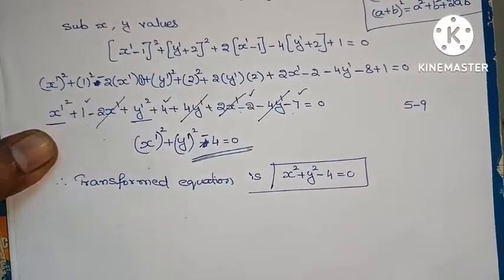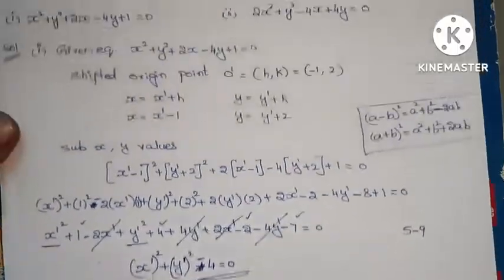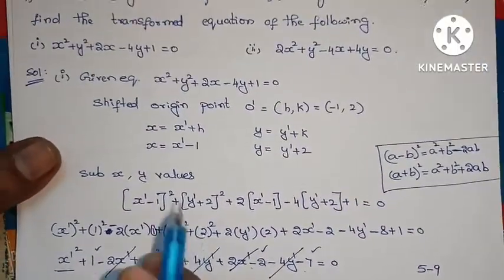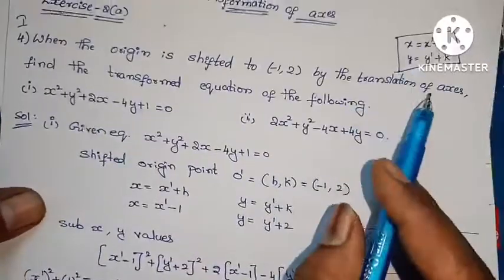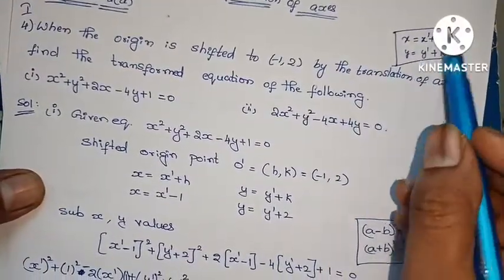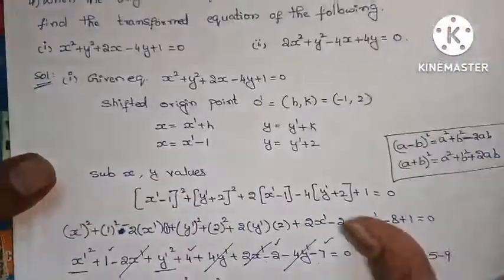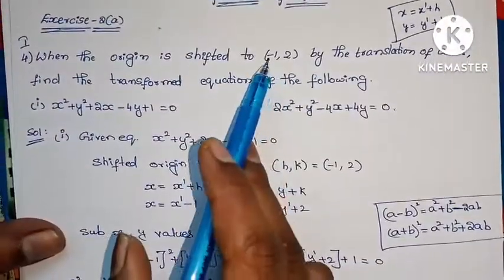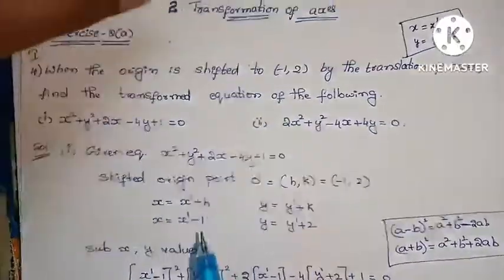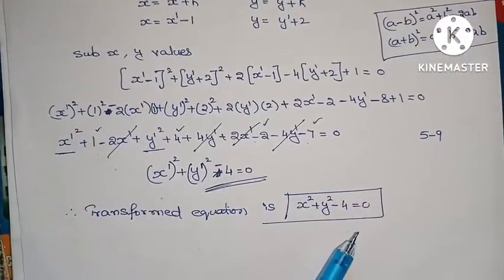Transformed equation is x square plus y square minus 4 equals to 0. This is very simple. The translation of axes formula is x equals x dash plus h, y equals y dash plus k. We know h comma k values are minus 1 comma 2, substitute to solve the answer.